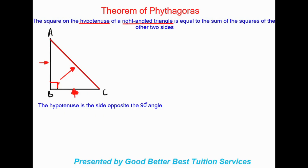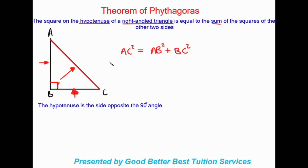Let's write it out in red. We say the square on the hypotenuse — we know the hypotenuse is line AC — so we say AC squared, because the square on the hypotenuse is equal to the sum (which is addition) of the squares of the other two sides, AB and BC. So: AC squared equals AB squared plus BC squared. That is the theorem of Pythagoras written out in full.